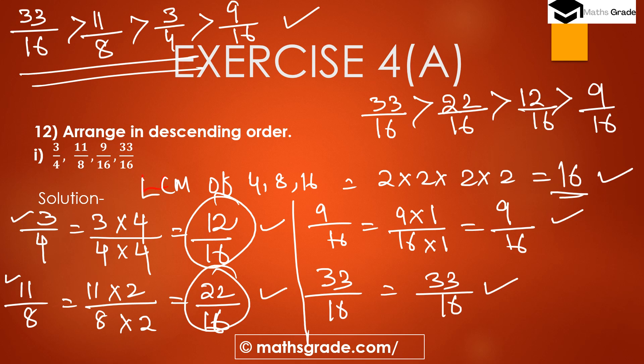So the rational numbers arranged in descending order, that is greatest to least, are: 33 by 16, then 11 by 8, then 3 by 4, then 9 by 16. The formula is: first convert to equivalent rational numbers with the same denominator, then compare the numerators. The greatest numerator gives the greatest rational number. If the number has a minus sign, that will be the smallest rational number.